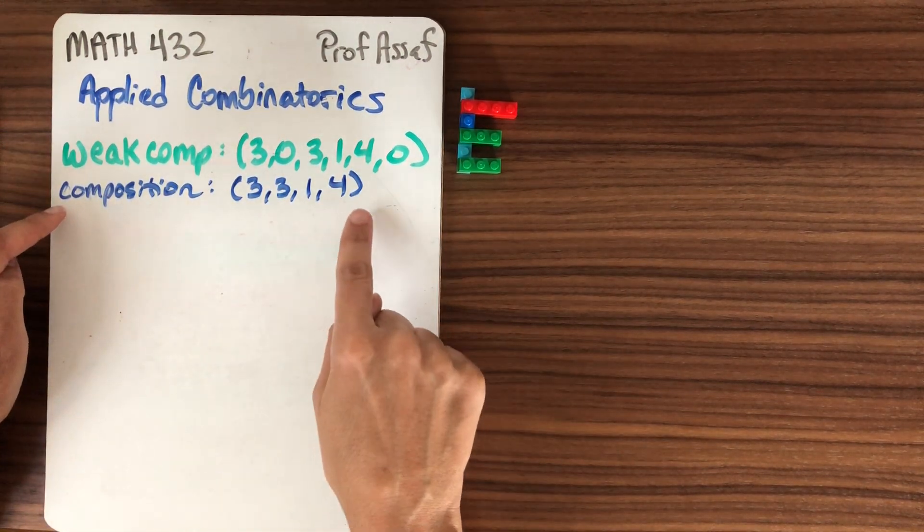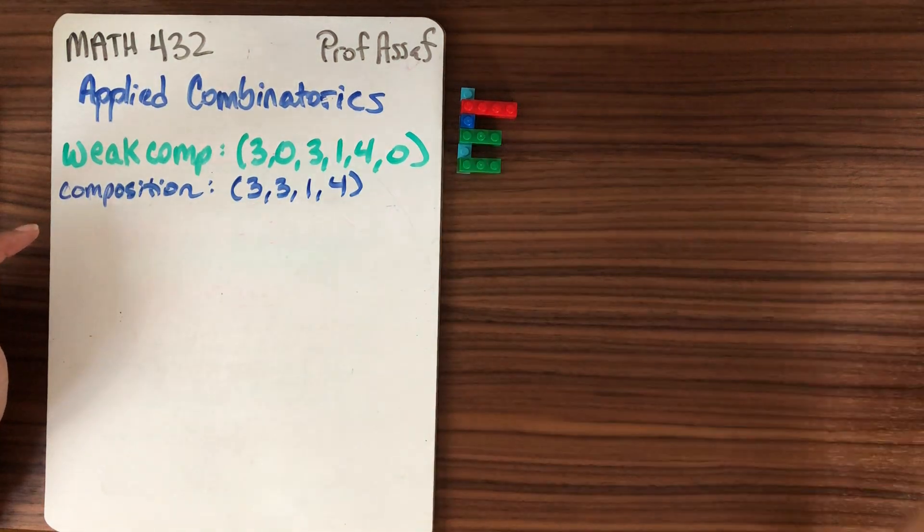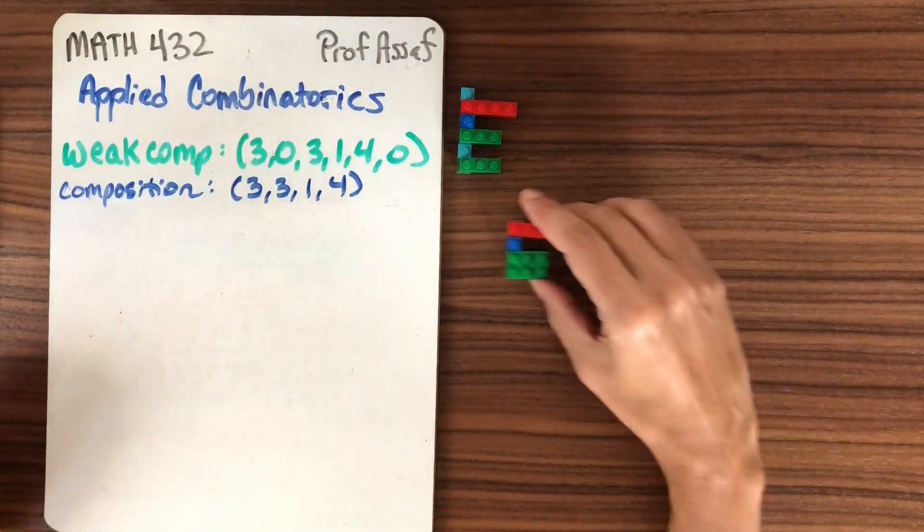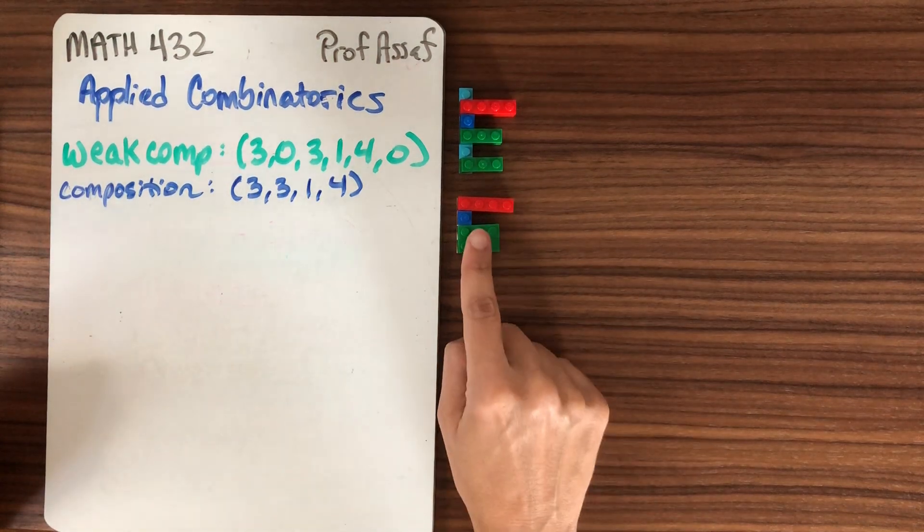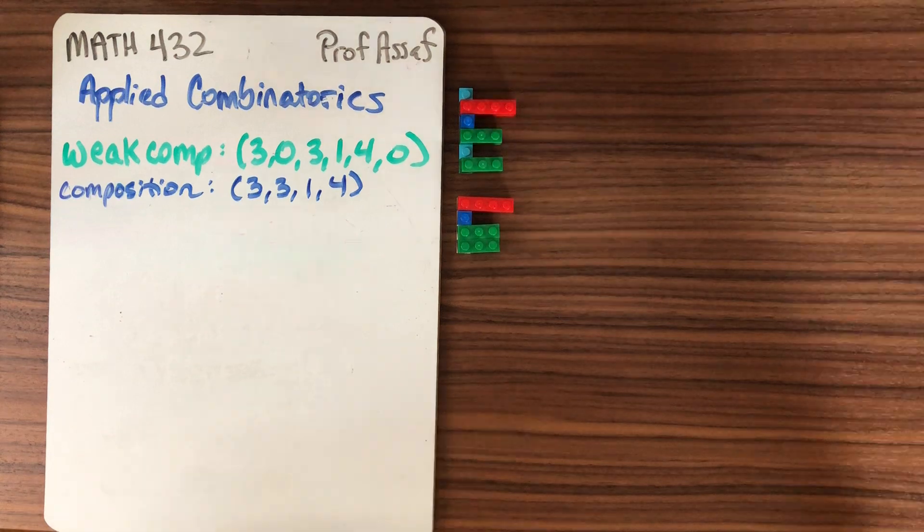A composition, sometimes called a strong composition, is positive integers. So we can think about taking this and compressing out the zeros and we would end up with this strong composition. Of course, every strong composition is a weak composition as well.